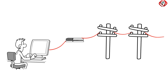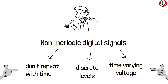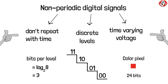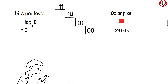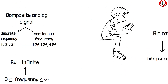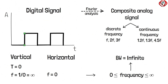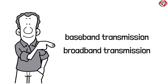So in this video, we learnt non-periodic digital signals, the number of bits transmitted per level, bit rate, decomposition of a digital signal to a composite analog signal, and the transmission of digital signals by baseband transmission and broadband transmission.